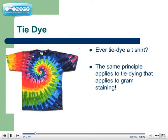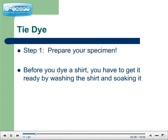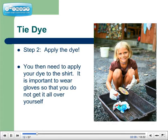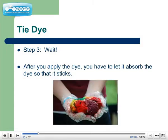Ever tie-dye a t-shirt? The same principle applies to tie-dyeing that applies to Gram's staining. Step 1: Prepare your specimen. Before you tie-dye a shirt, you have to get it ready by washing the shirt and soaking it. Step 2: Apply the dye. You then need to apply the dye to your shirt. It's important to wear gloves so that you don't get it all over yourself. Step 3: Wait. After you apply the dye, you have to let it absorb the dye so that it sticks.